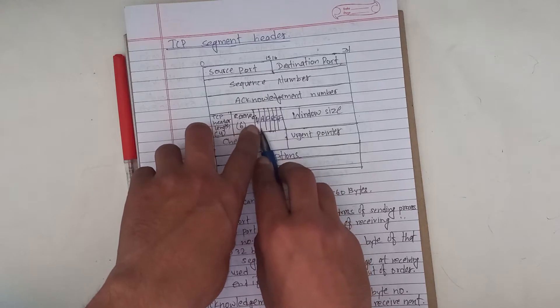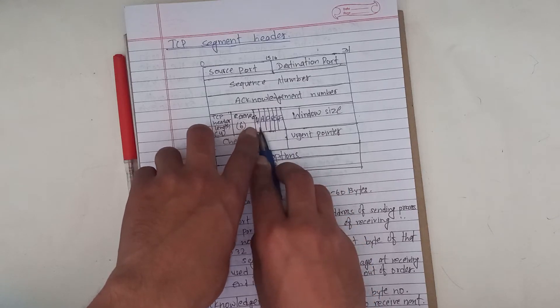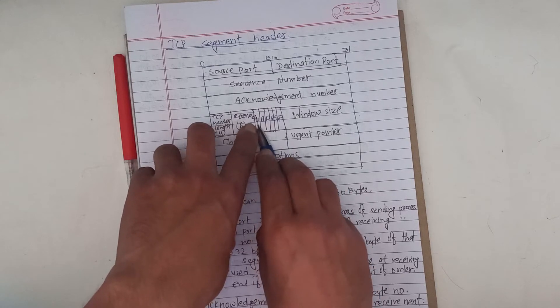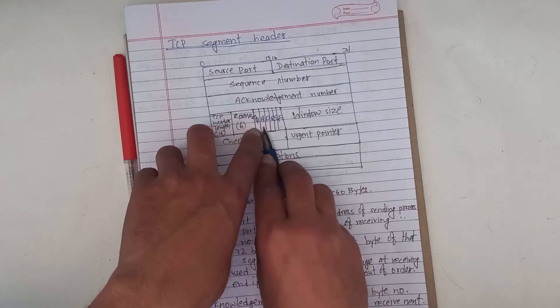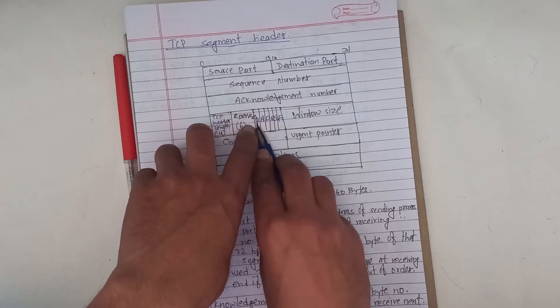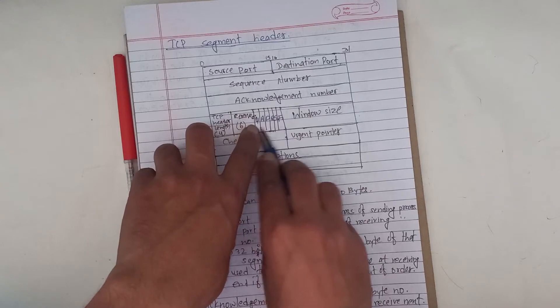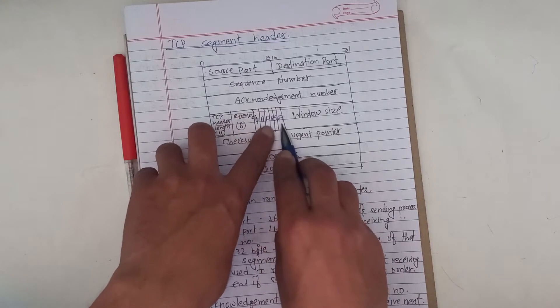There is also a TCP header length of 4 bits, reserved 6 bits, and the flags field — this is important. This is used for the handshake, data transfer, and includes the urgent pointer. UAP, RSF — understand?